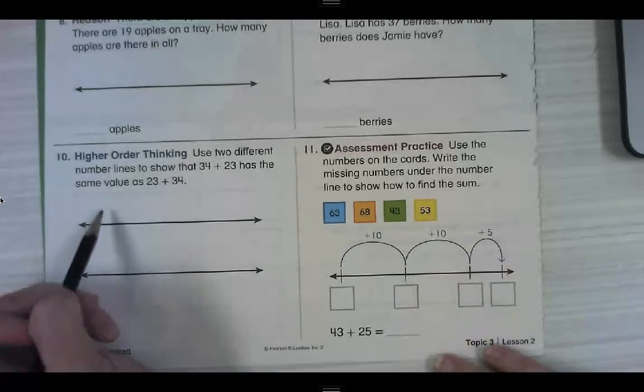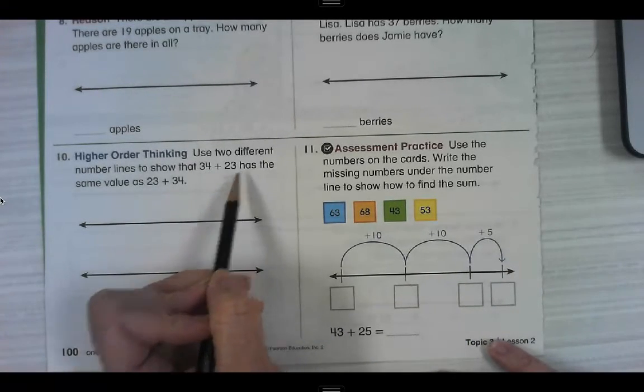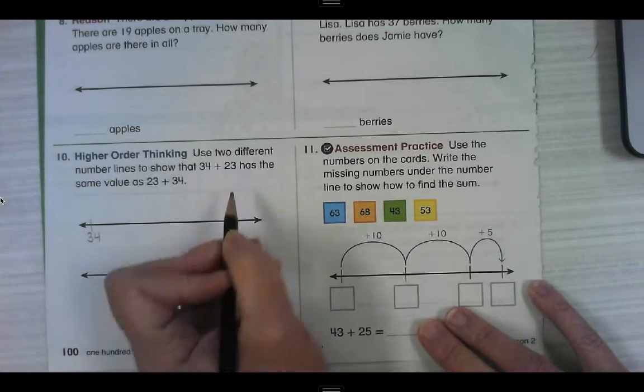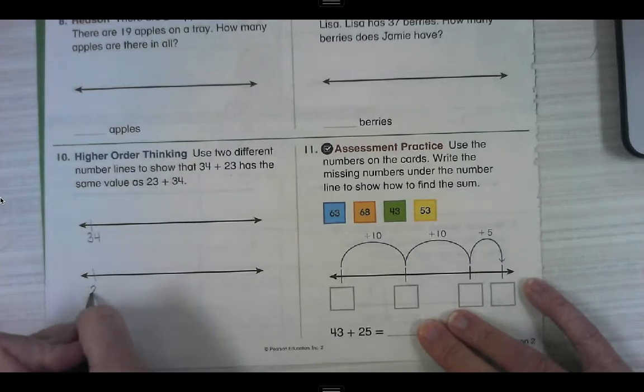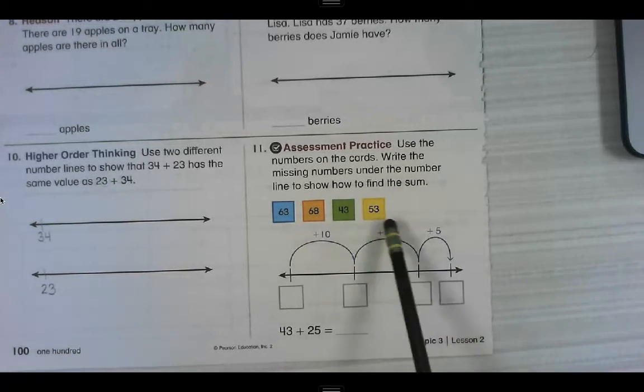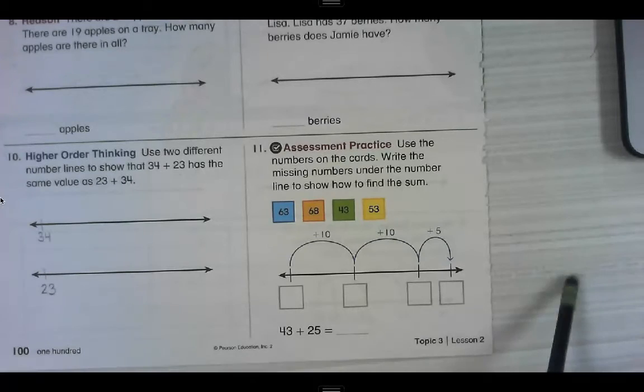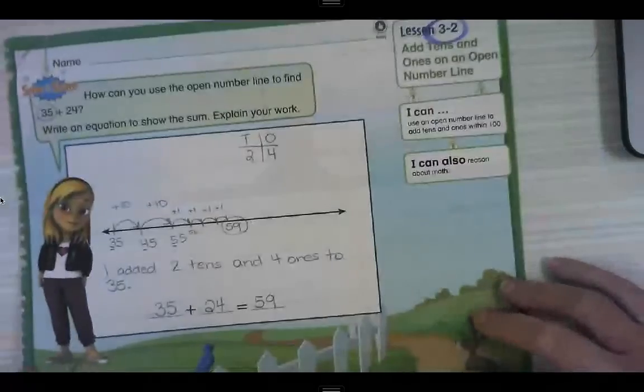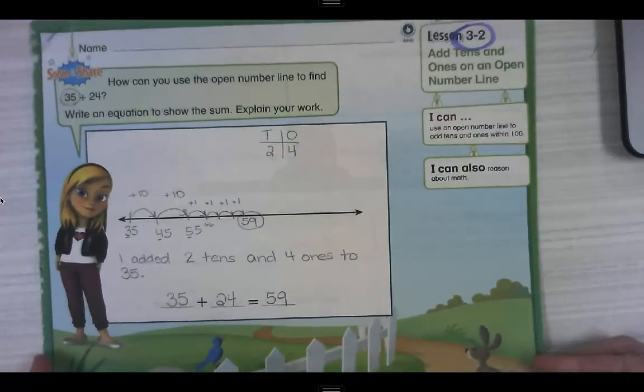Number 10. Use two different number lines to show that 34 plus 23 has the same value as 23 plus 34. I believe that on this one, they want you to see, to start with 34 and add 23. And down here, let's start with 23, which is not normally what we do and add 34. But they should have the same sum because when we add and we rearrange the digits, the sum stays the same. All right. Number 11. Use the numbers on the cards. Write the missing numbers under the number line to show how to find the sum. Oh. Well, we know the sum is going to have to be the greatest of these numbers, right? Use that as a starting spot.